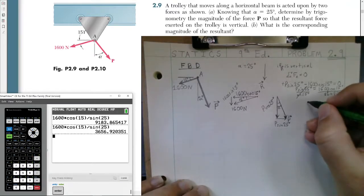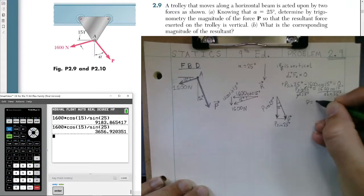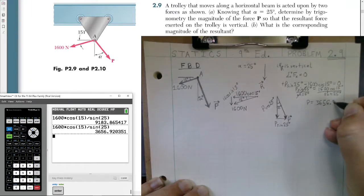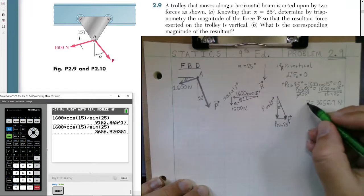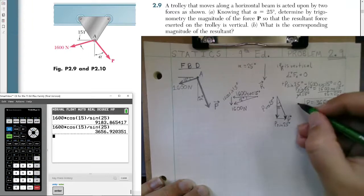And now we get our correct answer for our value of the P vector. Magnitude of P is equal to 3,656.9 newtons. Always be sure to include our unit with our answer. Alright. So that's our answer in part A. Complete.